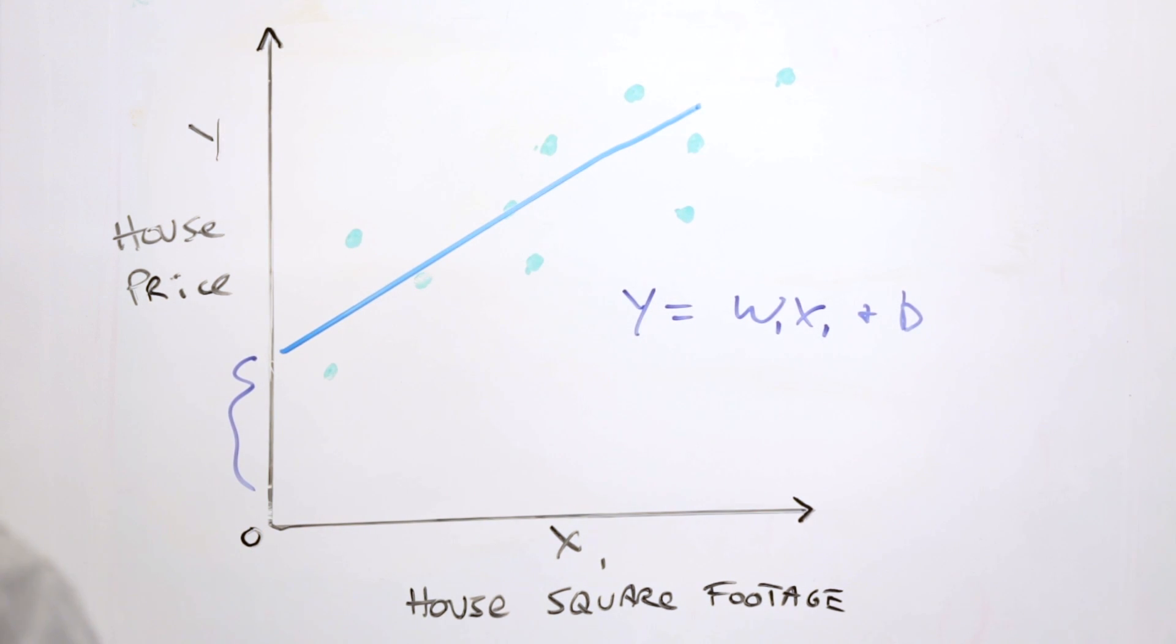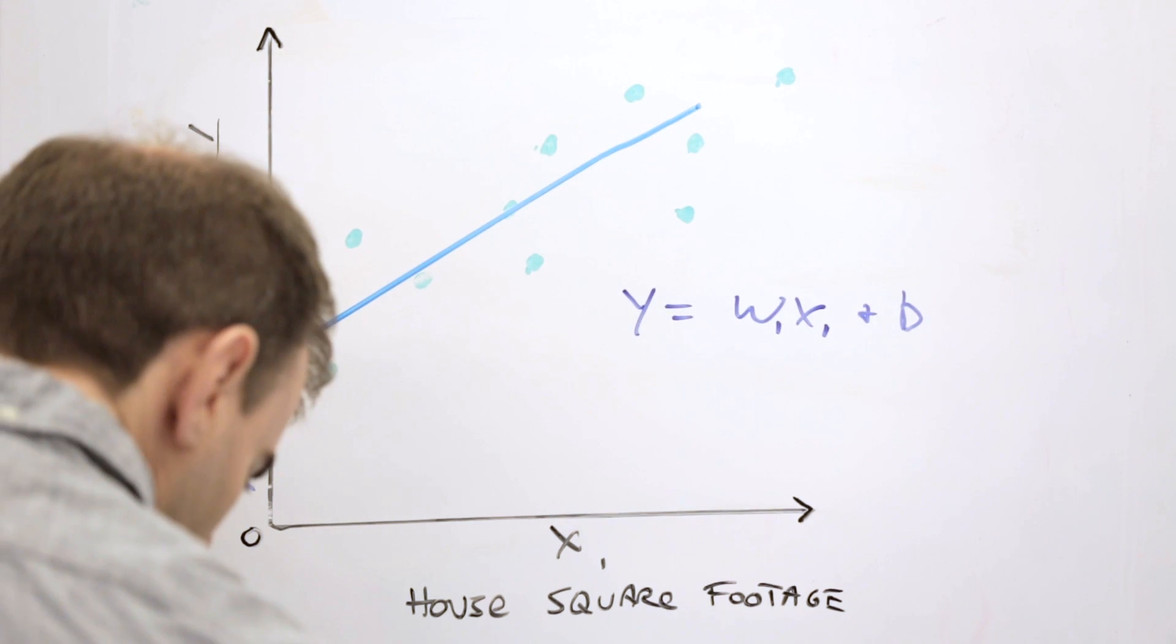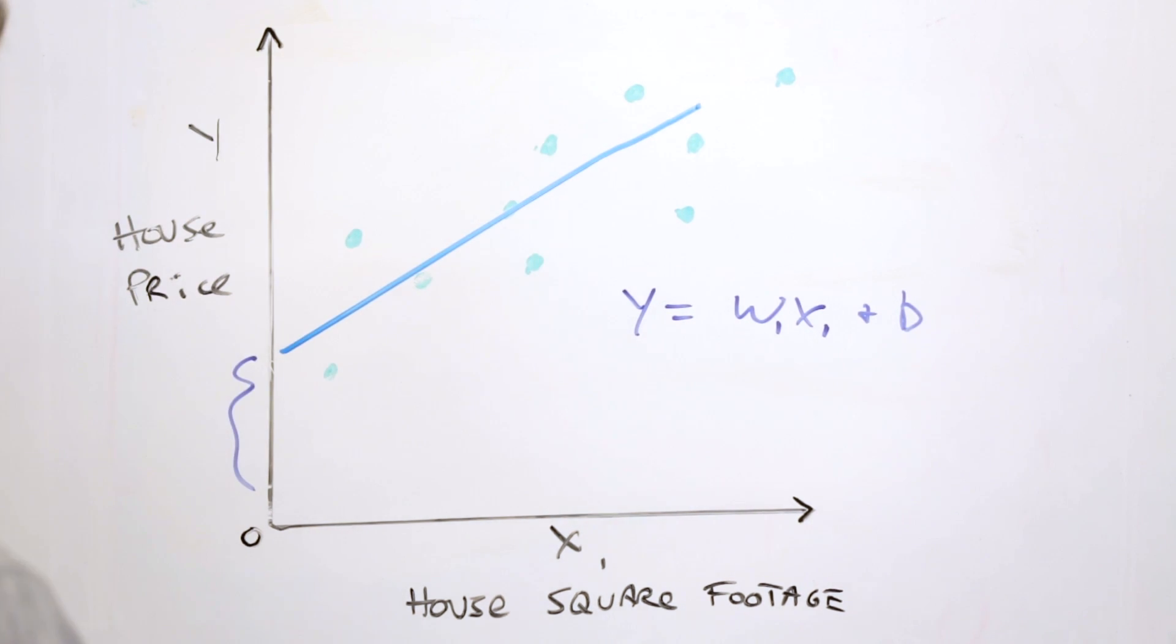How do we know if we have a good line? Well, we might want to think of some notion of loss here. Loss is showing basically how well our line is doing at predicting any given example. So we can define this loss by looking at the difference between the prediction for a given x value and the true value for that example.